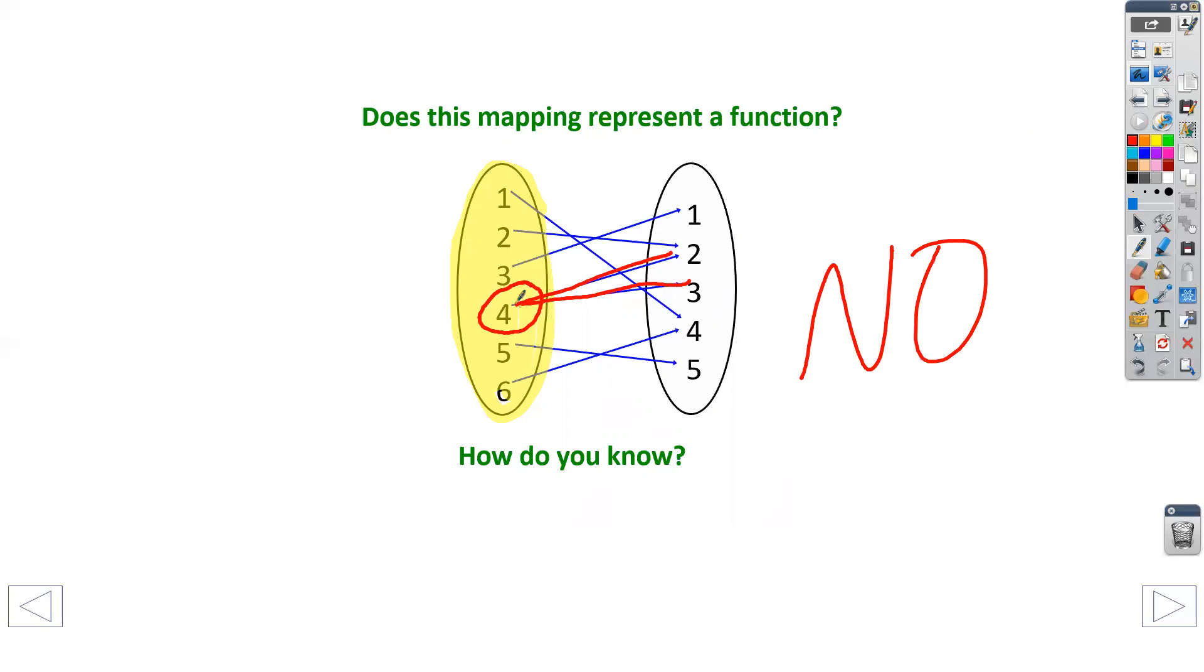And we can say because the input, the X, has two outputs. It has two numbers from it. So my X repeats. When we're looking at functions, X can never, ever repeat.